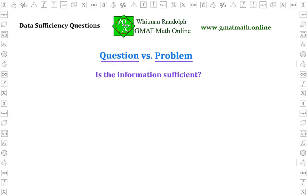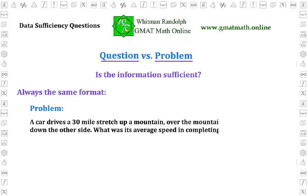DS questions measure your ability to determine whether the information given in two supplemental statements is sufficient for solving the problem. The format of every DS question is the same. First, there's the general statement of the math problem. For example: a car drives a 30-mile stretch up a mountain, over the mountain's pass, and down the other side. What was its average speed in completing this portion of its trip? This statement tells you the problem you would need to solve, but it gives you practically none of the information you need to do so.